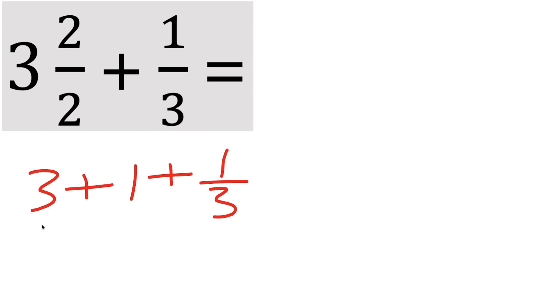Our next step is to combine the whole numbers. So 3 plus 1, we know we get 4, and we still have this fraction, which is 1/3. So 4 and 1/3 would be our final answer.